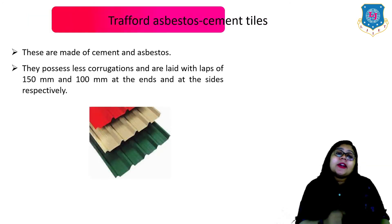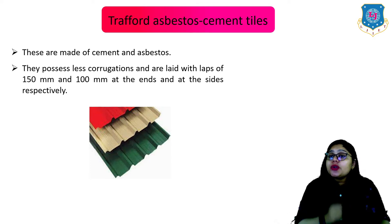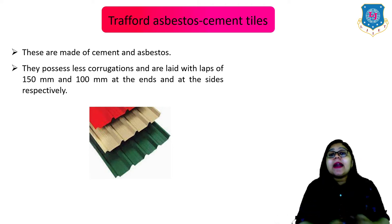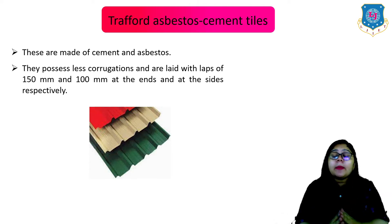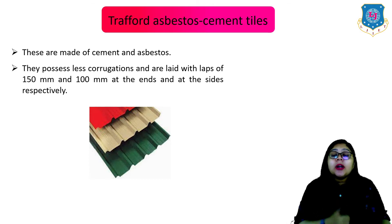Now let us move to the next one which is Trafford asbestos cement tiles. These are made of cement and asbestos. They possess less corrugation and are laid with laps of 150 mm and 100 mm at the ends and at the sides respectively.